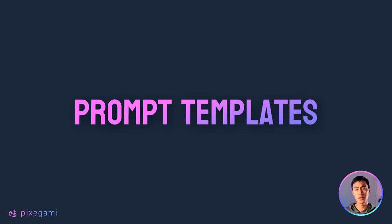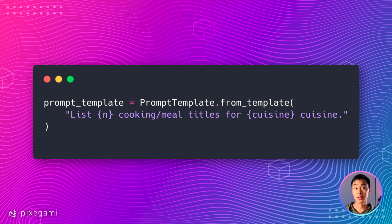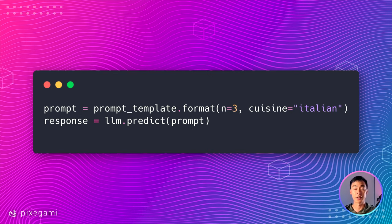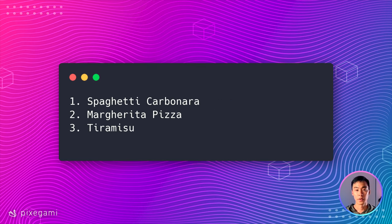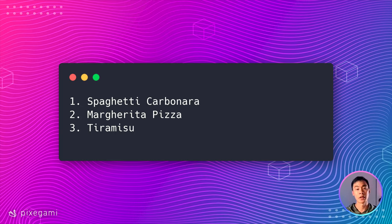Most of the time though, if you're using LLMs for an app, you're going to want a prompt template that you can use to create multiple other prompts just by plugging in some values. Here's an example. In this prompt template, I want it to list n number of meal ideas for a particular type of cuisine. So I make the number of recipes I want and the type of cuisine pluggable inputs to this template. To then create a prompt from the template, you can use the format method and then provide values for the placeholders. This is incredibly useful if you want to build an app and only expose fields for your end user to fill in, and then have your prompt template do all of the heavy lifting.